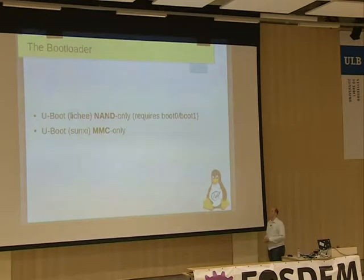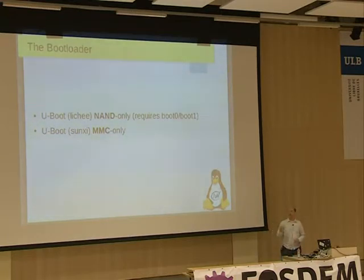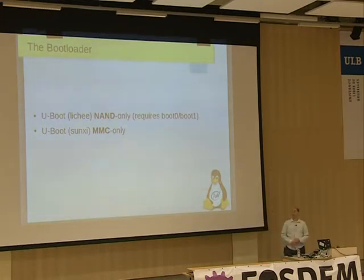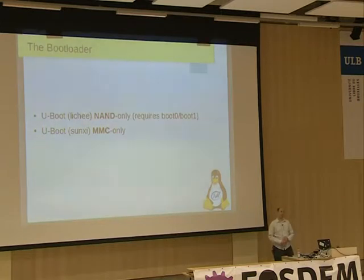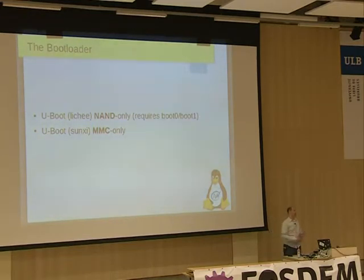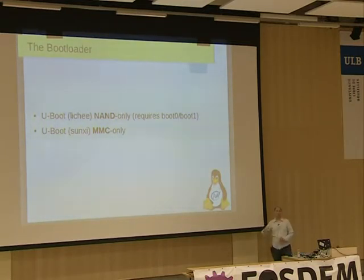Our own uBoot — we call it the Sunxi uBoot — is just a different branch. Compared to the mainline, we haven't merged it all upstream yet; it needs a lot of cleaning up, but it is very fully functional. It only boots from MMC, so you can only boot from an SD card, which can be a problem, but most developers actually do use that. The memory initialization, the most important task of the bootloader since the kernel can't do that, is done in this uBoot. It was donated from a former AllWinner employee and is based on boot0.